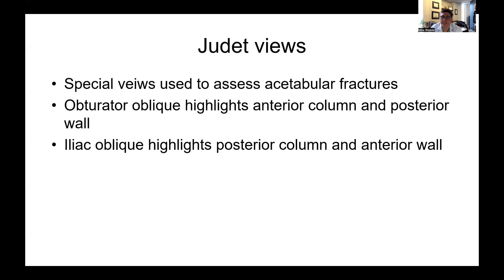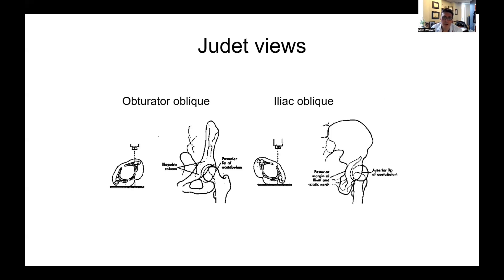For the acetabulum, in addition to the AP pelvis, we use Judet views, which are basically orthogonal views of the pelvis — 45-degree views to look at the joint. The obturator oblique is with the patient turned 45 degrees towards the x-ray beam, so you're looking right down the obturator ring, whereas the iliac oblique is the opposite, with the patient turned 45 degrees away.